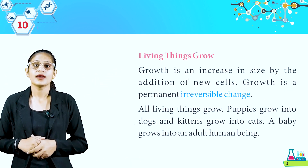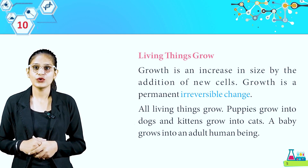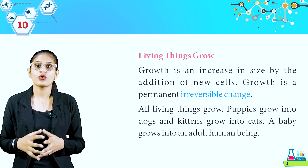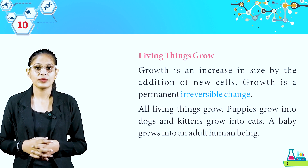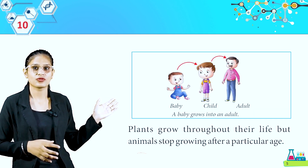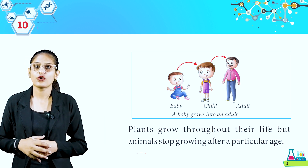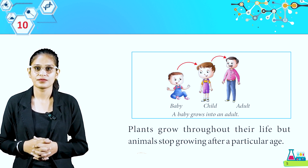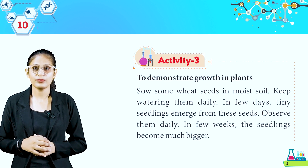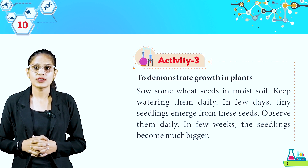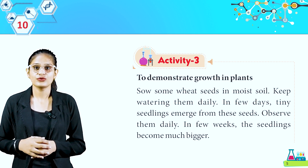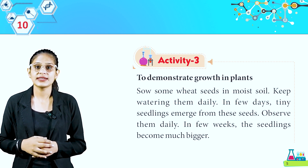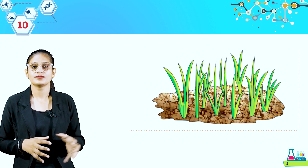Living things grow. Growth is an increase in size by the addition of new cells. Growth is a permanent, irreversible change. All living things grow — puppies grow into dogs, kittens grow into cats, a baby grows into an adult human being. Plants grow throughout their life, but animals stop growing after a particular age. Activity 3: To demonstrate growth in plants. Sow some wheat seeds in moist soil and keep watering them daily. In a few days, tiny seedlings emerge from the seeds. Observe them daily — in a few weeks, the seedlings become much bigger.